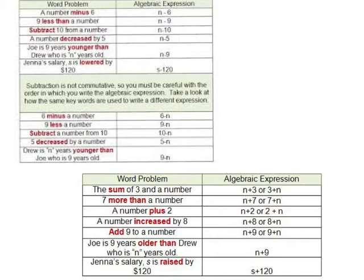I know these here at the top are a little fuzzy, but these are much clearer: a number minus six, nine less than a number, subtract ten from a number, a number decreased by five, Joe is nine years younger than, Jenna's salary is lowered by. These are subtraction expressions. These in red are some of the key words that if you see those, that's going to mean subtract.